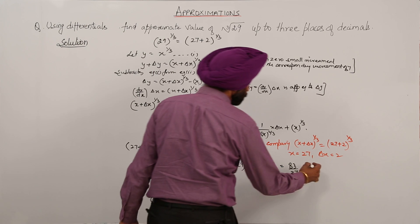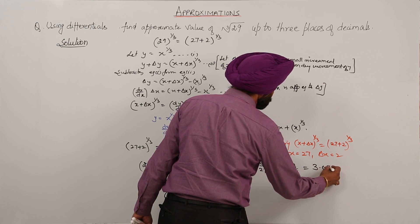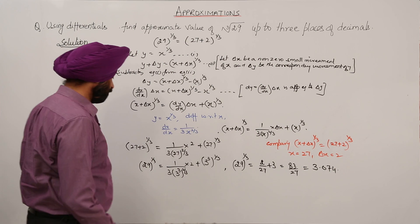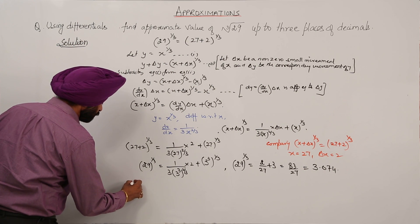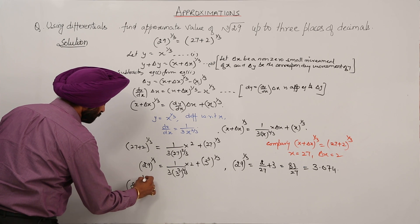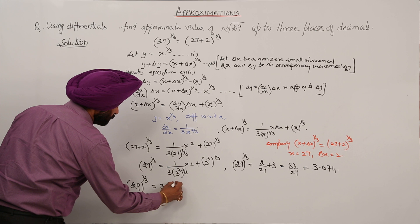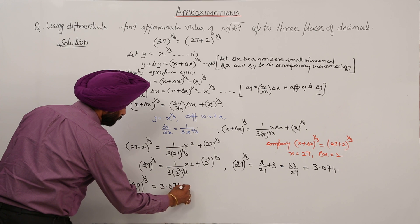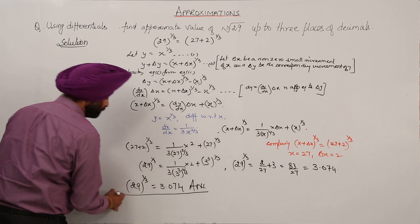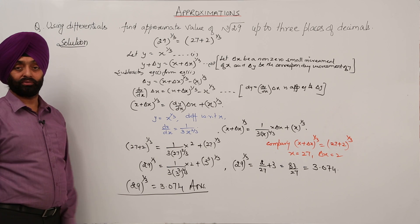When you divide 83 by 27, this becomes 3.074. So cube root of 29 is equal to 3.074. And this is your answer. So we can proceed like this also. Thank you.